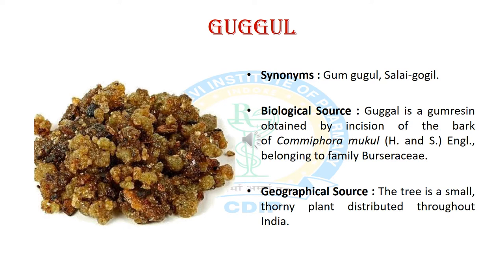We will discuss the second resin-containing crude drug, and it is Gugul. The synonyms of Gugul are gum gugul and sali gugul. The biological source is that it is obtained from incision of the bark of Commiphora mukul, belonging to the Burseraceae family. The geographical source: it is found throughout India.